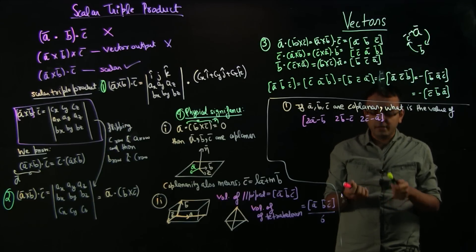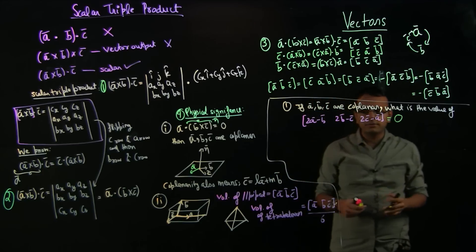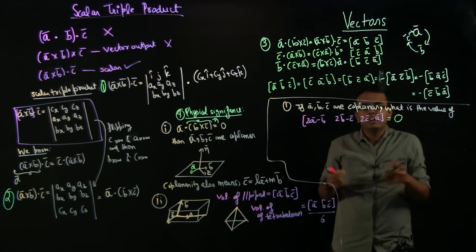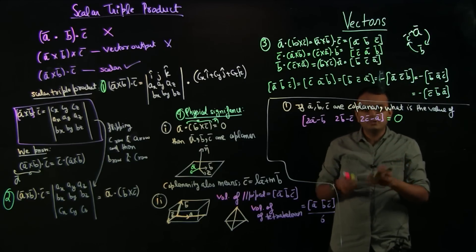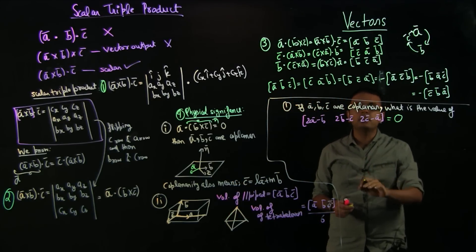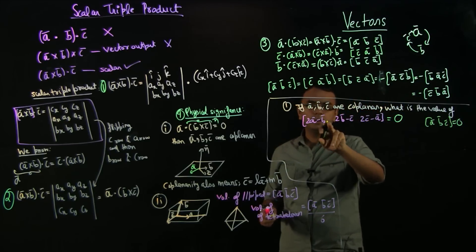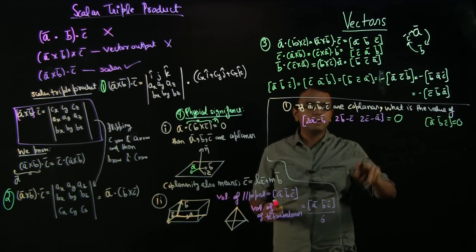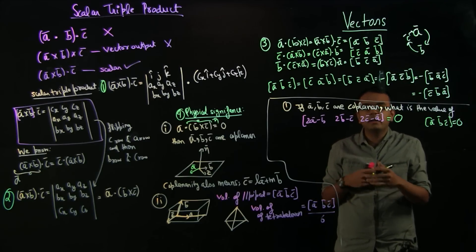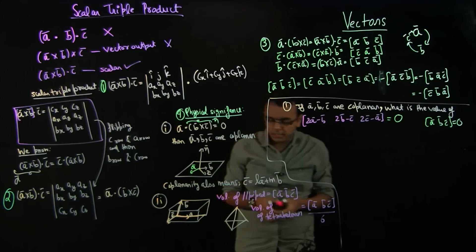Since all three vectors 2A−B, 2B−C, and 2C−A are linear combinations of A and B, they all lie in the same plane — so they are coplanar. You do not need to calculate anything. The scalar triple product is directly zero. Many students will try to expand this using [A B C] = 0 and open up brackets, but you just need to understand that coplanarity means any linear combination stays in the plane, so the scalar triple product is 0.